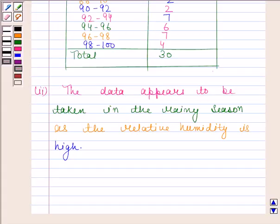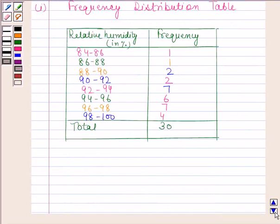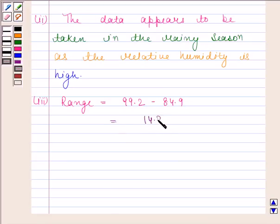Let's now move on to the third part. Third part says, what is the range of this data? Now, range is the difference between maximum and minimum value. Here, the maximum value is 99.2 and minimum value is 84.9. Their difference is equal to 14.3. This is our required answer.